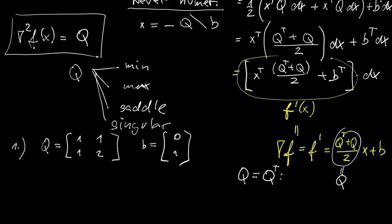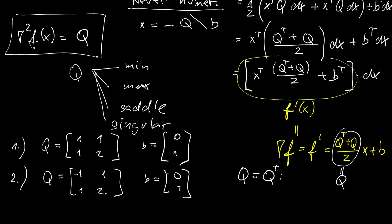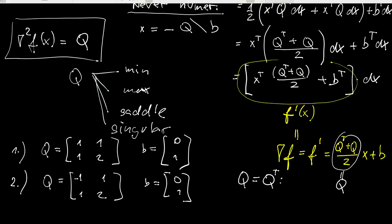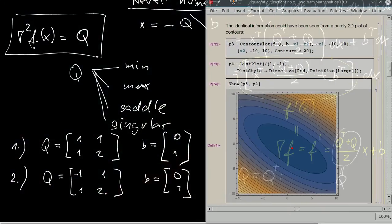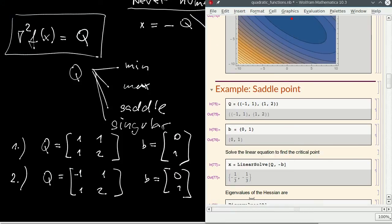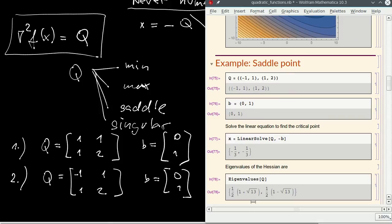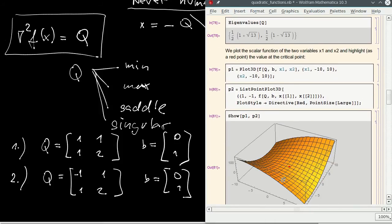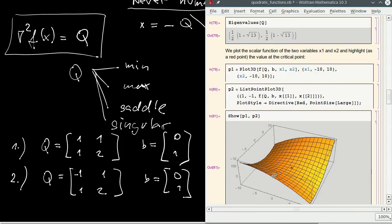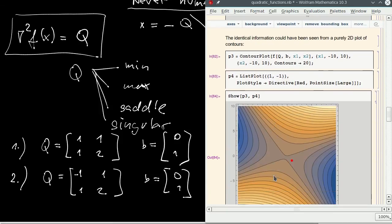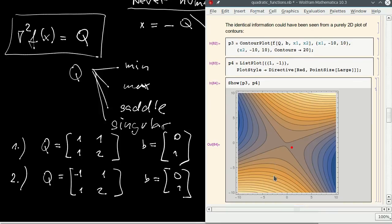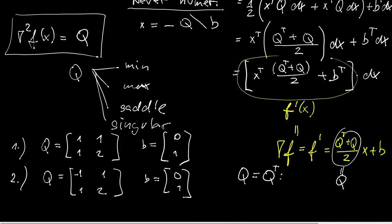Example 2: everything stays the same except the sign of the first entry in Q is changed. The critical point is now at (−1/3, −1/3), and the eigenvalues of the Hessian are one positive and one negative — perfectly satisfying the condition for a saddle point. The graph of the function confirms this, and the same information is visible from a different viewpoint in the contour plot.